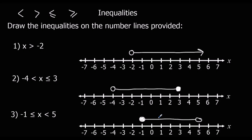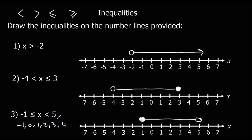So if we were asked what integer numbers it could be: it could be minus 1, 0, 1, 2, 3, or 4, but it can't be 5. Because it's not coloured in — it doesn't have an 'or equal' sign, so it can't be that.